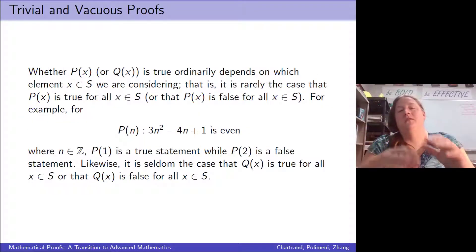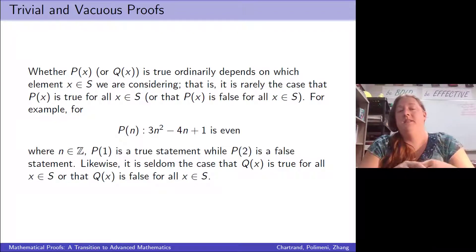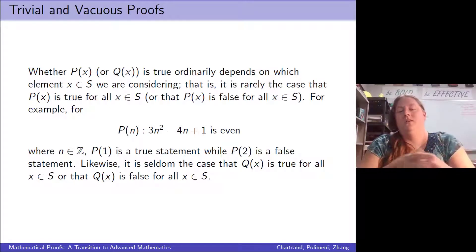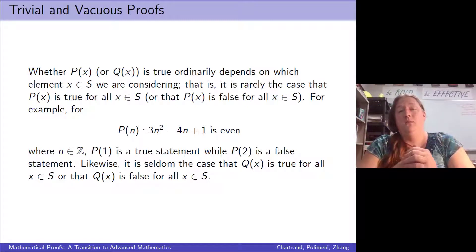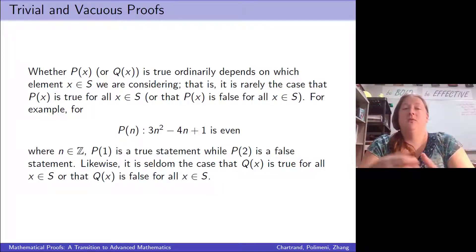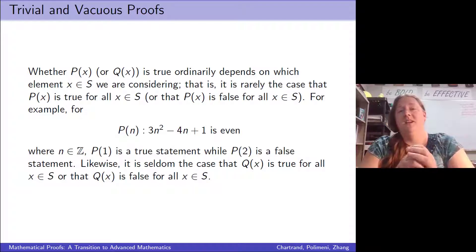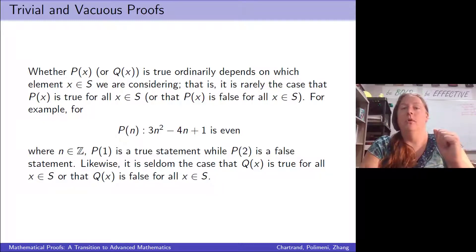We're going to consider some domain that we're using these open sentences over, and p and q are going to be true or false depending on what values we're plugging in from our domain. For example, the statement '3n² − 4n + 1 is even' — we plug in one and see it's true, then plug in two and see it's false. It's also very rare that q is always true or always false.